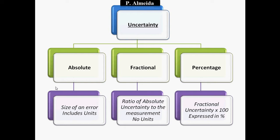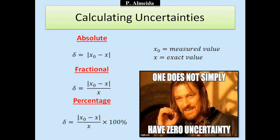Then you have the fractional uncertainty, which is the ratio of the absolute uncertainty divided by the actual measurement, the true value or the mean. Because you have one thing with units divided by another thing with the same units, it will have no units. Finally, you can have the percentage uncertainty, which is the fractional uncertainty times 100, expressed in percentage.